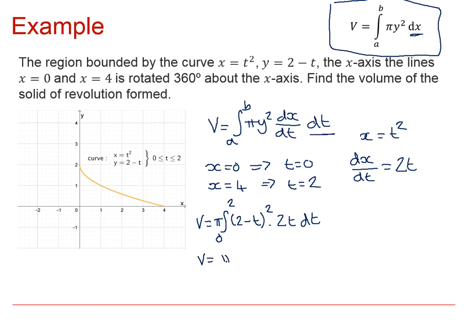So our volume is going to be the integral between 0 and 2 of 8t minus 8t squared plus 2t cubed with respect to T. When we do that integration, we get 4t squared minus 8t cubed over 3 plus t to the 4 over 2 between 0 and 2. And if you do your substitutions, you should find that your volume is 8 pi over 3.